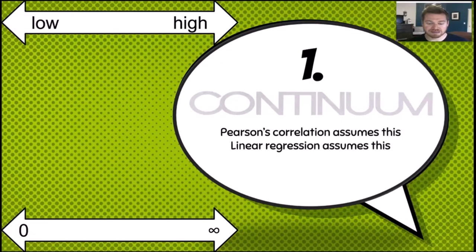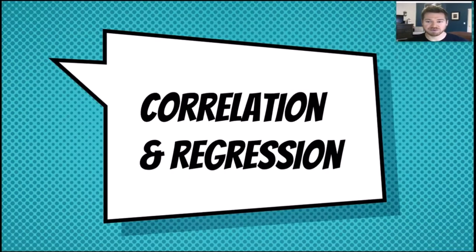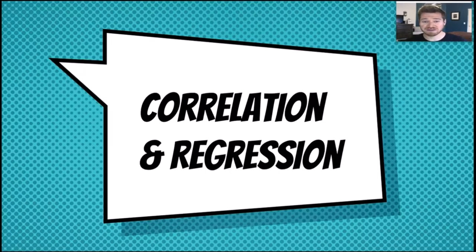Today we're going to cover correlation and regression, go through the lab, talk about some examples doing the math, and use Excel to demo some of the math to make sense of what's going on. This is a pretty straightforward idea — it really goes back to what you learned in high school: slope equations, rise over run, y equals mx plus b.